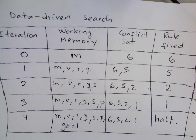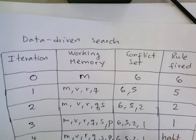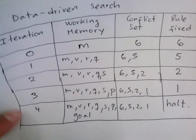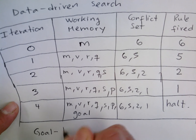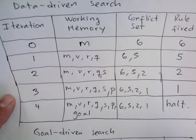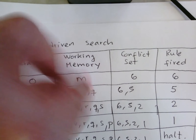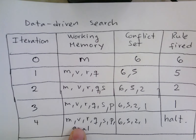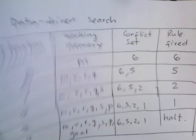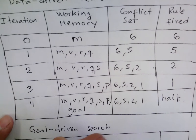This concludes the data-driven exercise. Now let's assume the question was instead asking for goal-driven search, and see what the difference is. In data-driven search we started with the data and matched facts until we reached the goal. In goal-driven search we start with the goal and work backwards until we get to the beginning — it is kind of the inverse.